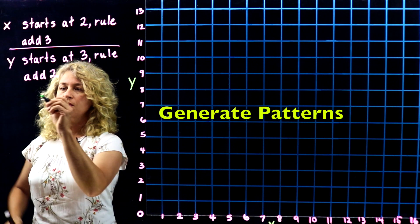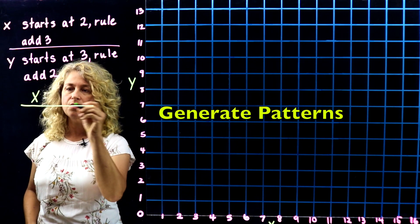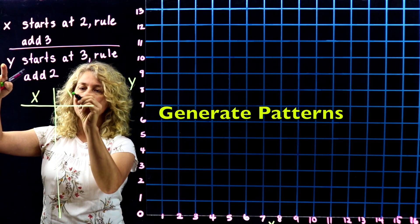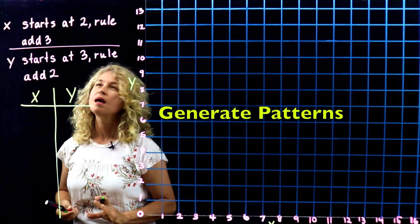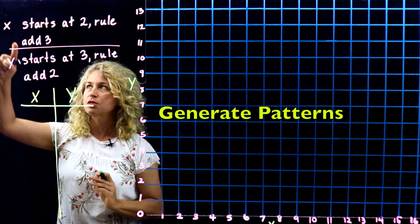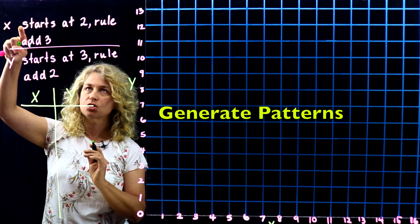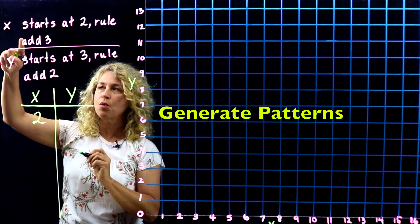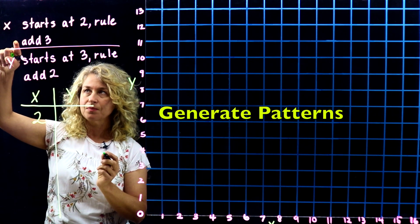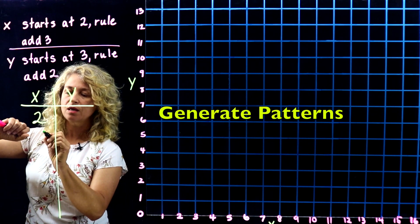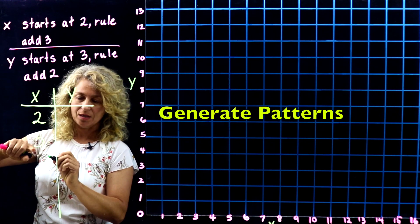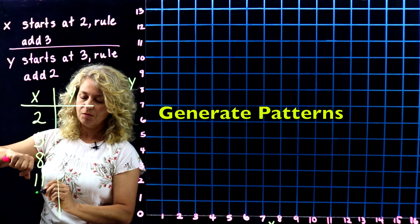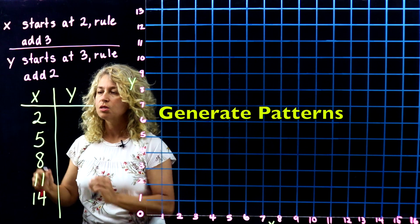Let's look at the first pattern — we'll label it X — and the second pattern will be Y. Pattern X starts at 2, and the rule is add 3. So: 2, plus 3 is 5, plus 3 is 8, plus 3 is 11, plus 3 is 14.